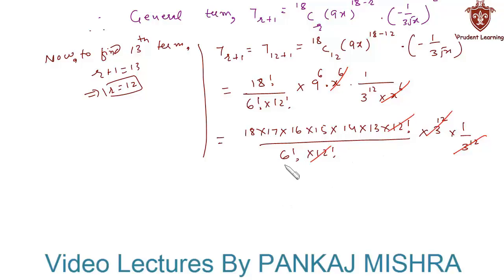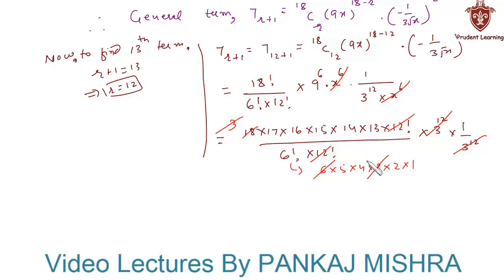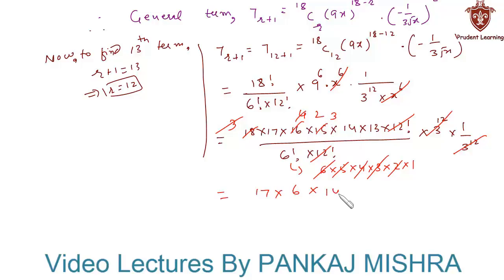6 factorial is nothing but 6 into 5 into 4 into 3 into 2 into 1. Simplifying: 6 ones are 6, 6 threes are 18, 3 and 3 cancel, 4 fours are 16, 2 twos are 4, 5 threes are 15. So we have 17 into 6 into 14 into 13, which is finally equal to 18564.